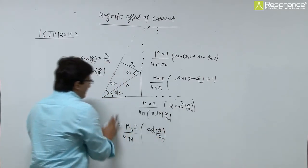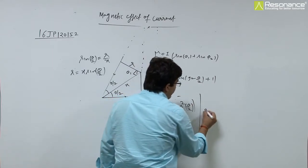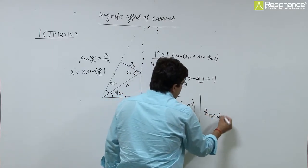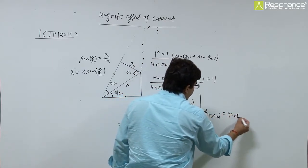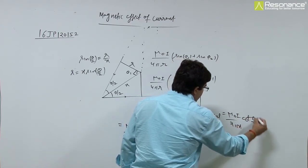Magnetic field due to one wire, and due to other wire also same. So total magnetic field, B total equals to mu 0 i by 2 pi x cot theta by 2. This is the answer.